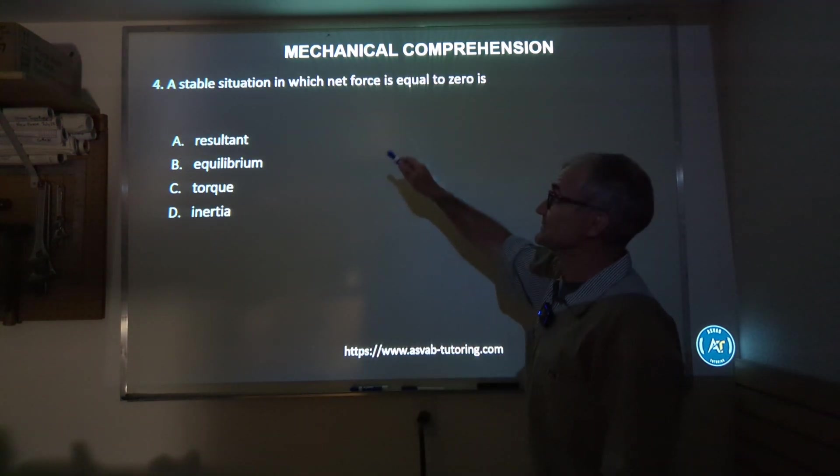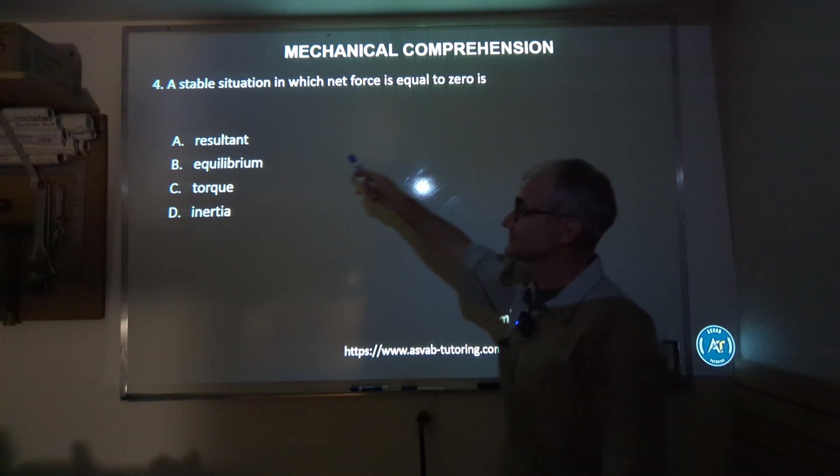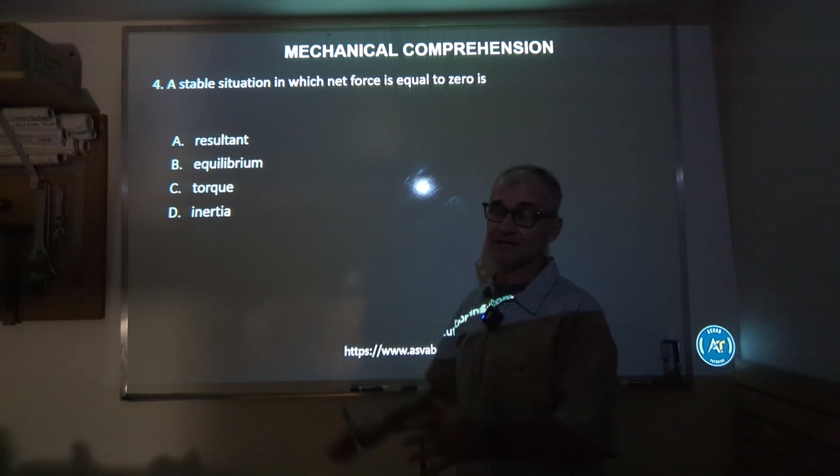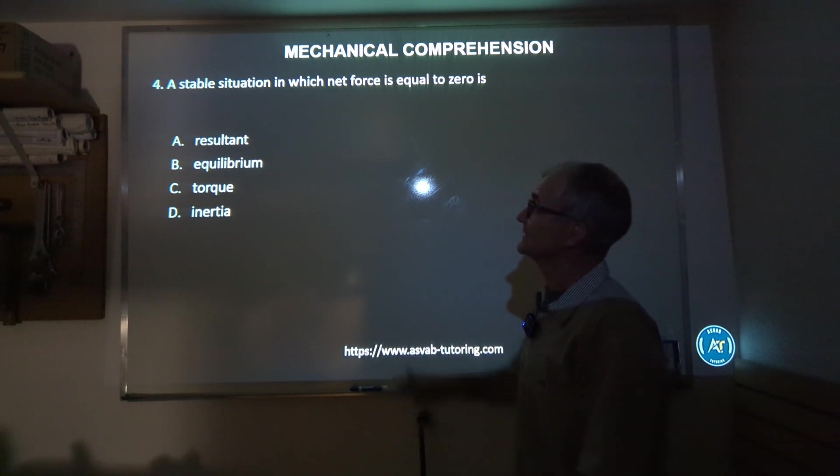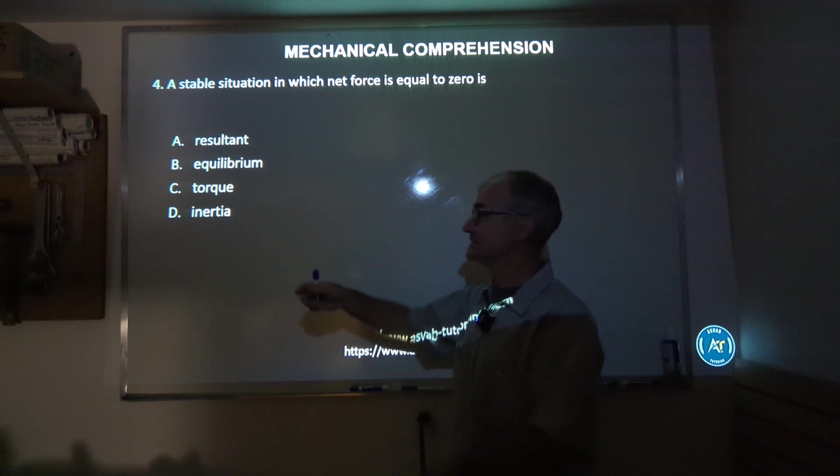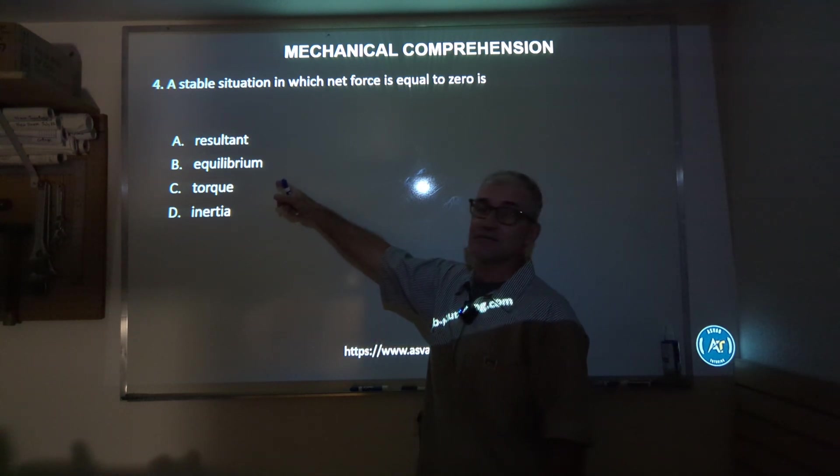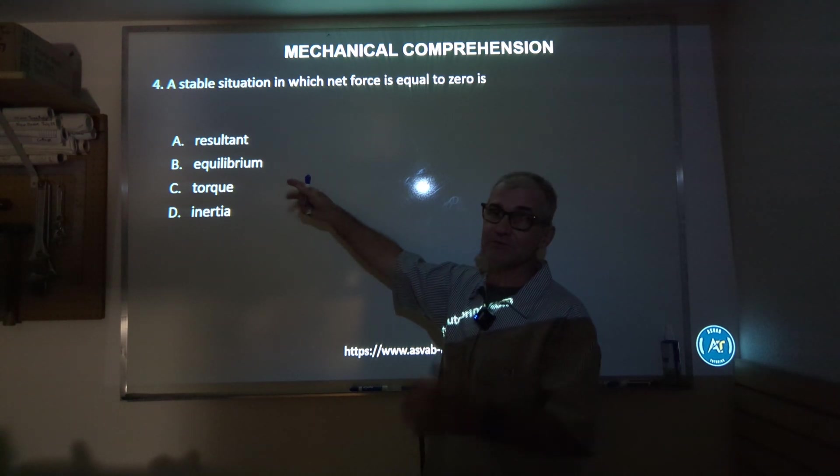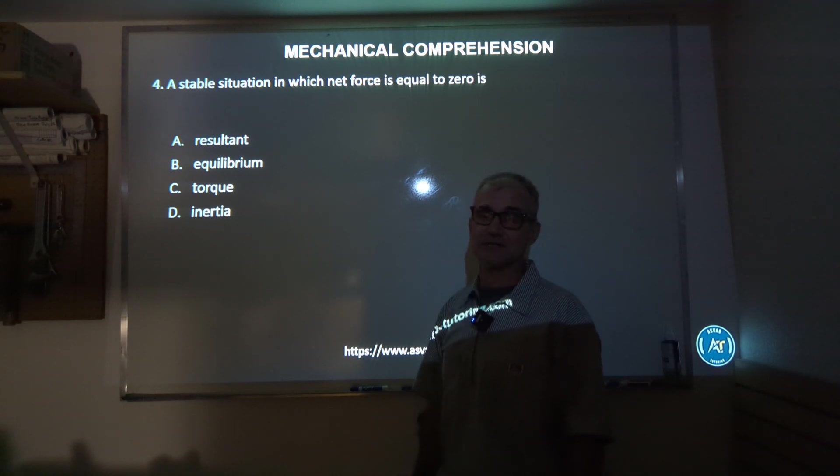Number four: a stable situation in which net force is equal to zero - resultant, equilibrium, torque or inertia. Again, a vocabulary question really. A stable situation, that means things are equal on both sides of the equation. So the correct answer is equilibrium. If you kind of know the roots of the word, you could figure it out even if you're not quite sure what the correct answer is. So four is B, equilibrium.